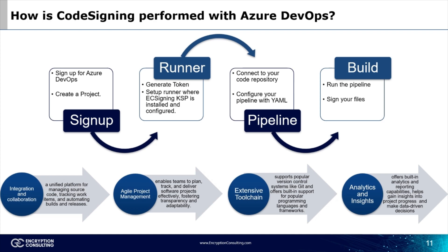To code sign with Azure DevOps, first you will need a registered account with Azure DevOps and a project you wish to sign. Using the DevOps portal, we will need to generate an authentication token. We will use this to set up the runner in the directory where CodeSign Secure's EC Signer KSP is located.